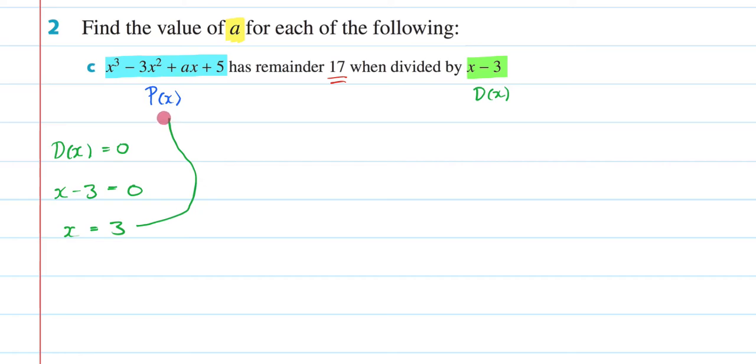I now am going to substitute that into my dividend, which means I'm going to wind up with p(3) is equal to, now every time I see an x I'm going to put a 3 in there. So it's going to be 3 cubed minus 3 times 3 squared plus 3a plus 5 is going to be equal to, now it's going to be equal to 17 because that is my remainder.